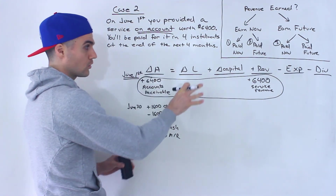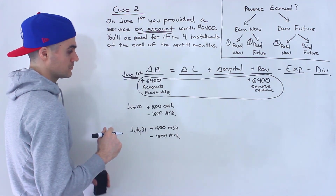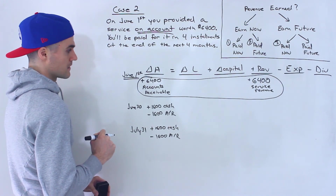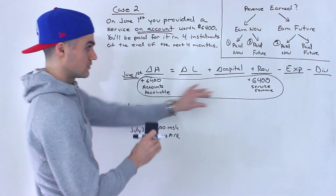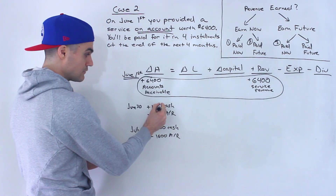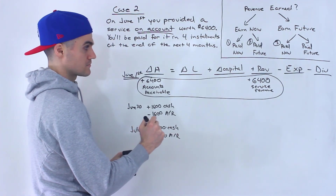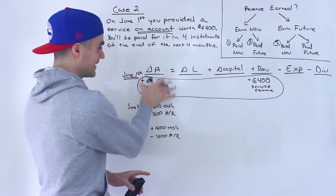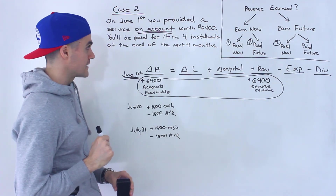The same transaction then happens at the end of August and the end of September, completing four total installments. So you can earn revenue in a period but receive the cash in future periods. When that happens, you initially have an accounts receivable on the asset side, which then decreases as cash comes in.